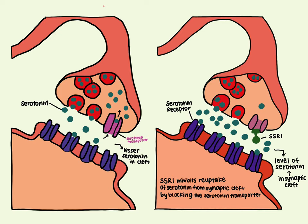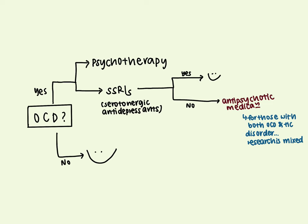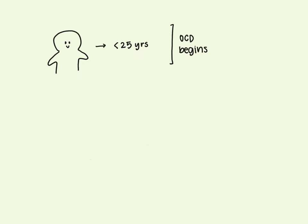If symptoms do not improve with these medications, research shows that some patients may respond well to an antipsychotic medication. Although antipsychotic medication may help manage symptoms for people who have both OCD and a tic disorder, research on its effectiveness for OCD is mixed. Like most mental disorders, treatment is often individualized and might start with either psychotherapy or medication, or a combination of both where medication is ineffective. OCD usually begins before the age of 25 years, and often in childhood and adolescence. Cases appearing after age 50 are rare and are often caused by illness rather than being psychiatric in nature.